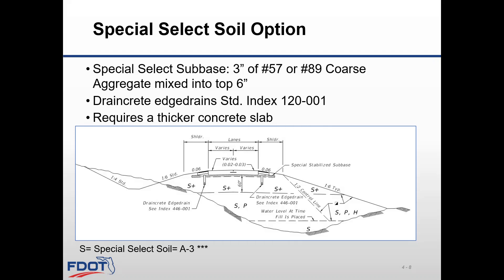The other base option to use with rigid pavement design is the special select soil base. The use of the special select soil base is only to be used when there is a history of good performance for the construction and performance with concrete pavements. The base must have sufficient permeability and be available at a reasonable cost. It is particularly important when the existing concrete pavement has special select soil and widening is done using asphalt base, as the designer needs to verify that edge drains are provided and the new widening design doesn't trap water.